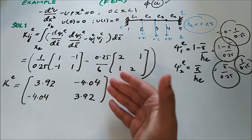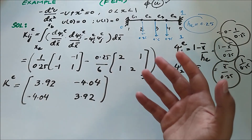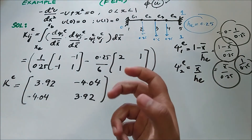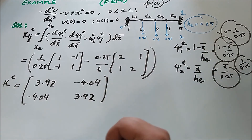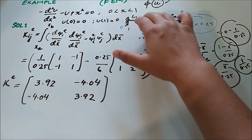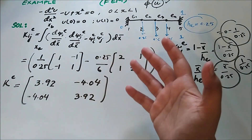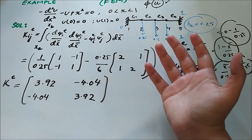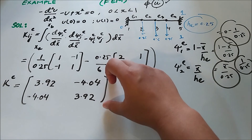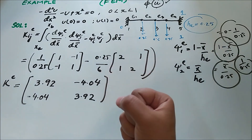After plugging in the values and integrating, we obtain the stiffness matrix for each element. This is the same for all elements because they all share the same coefficient a = −1 and the same element length of 0.25. This stiffness matrix is in the local coordinate system — we will assemble them into the global system later. We write this result aside to use it in the assembly step.